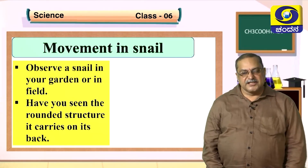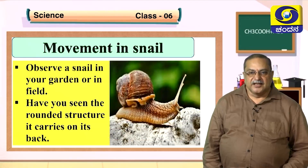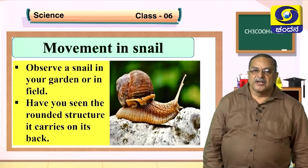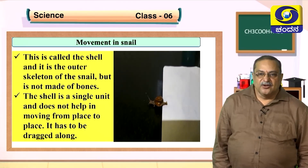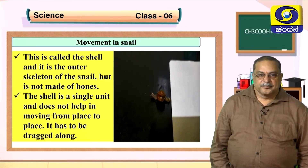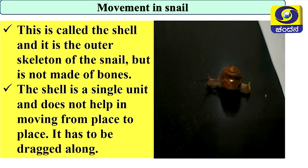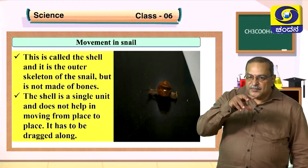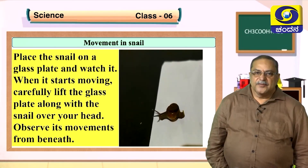Now we are going to see the movement of the snail. If you observe a snail in the garden, you will see a rounded structure it carries on its back — that is called the shell. The shell is the outer skeleton of the snail, but it is not made up of bones. It is a single unit and does not help in moving; the snail has to drag it along as it goes.